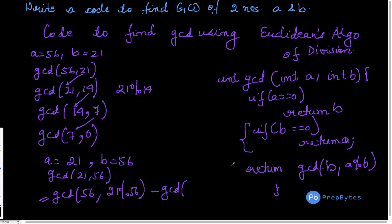So if B is greater than A, then in the first step, first GCD B comma A mod B, the swapping actually happens. So we get 56 comma 21 and after this particular process follows. So this is how we are getting the GCD.